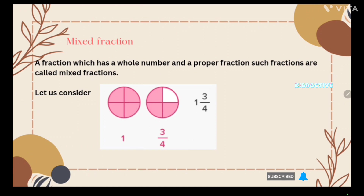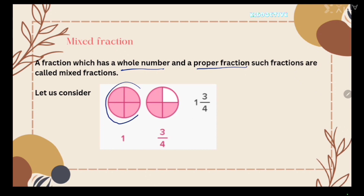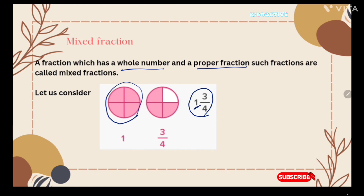Let's learn what a mixed fraction is. What do you mean by a mixed fraction? A fraction which has a whole number and a proper fraction. A whole number means this one — we count one. And a proper fraction means the numerator is smaller than the denominator, like three upon four. So one and three upon four is called a mixed fraction.